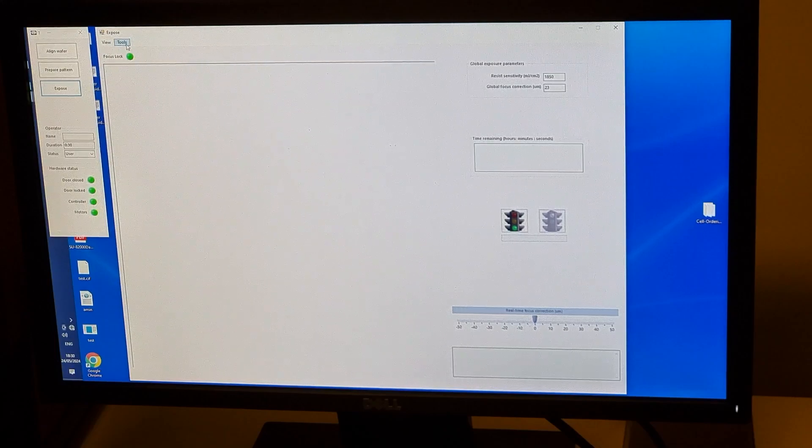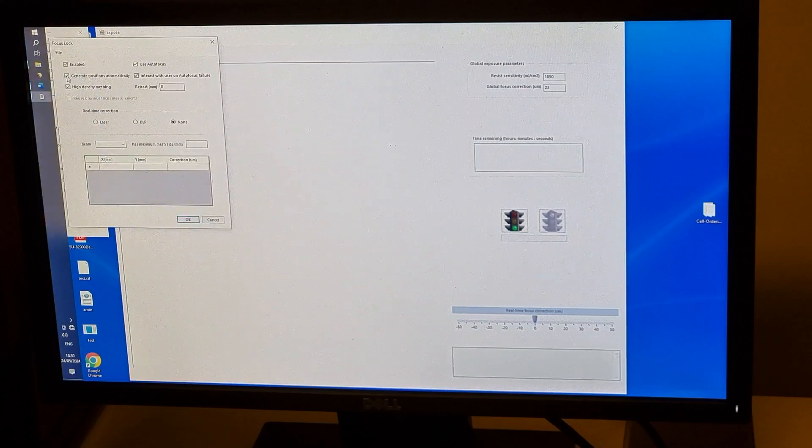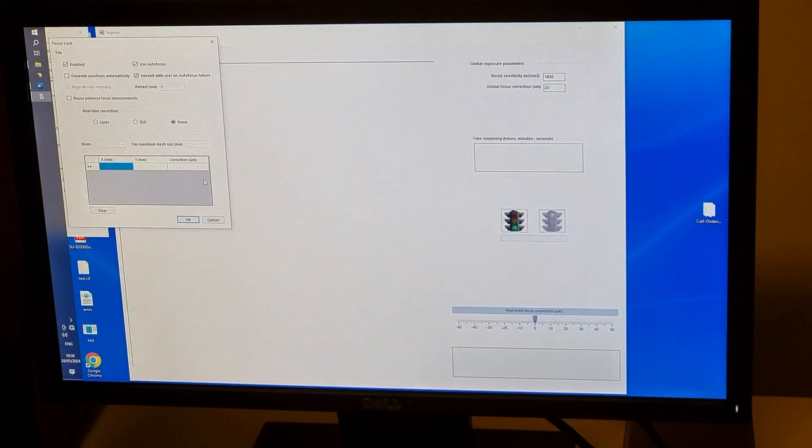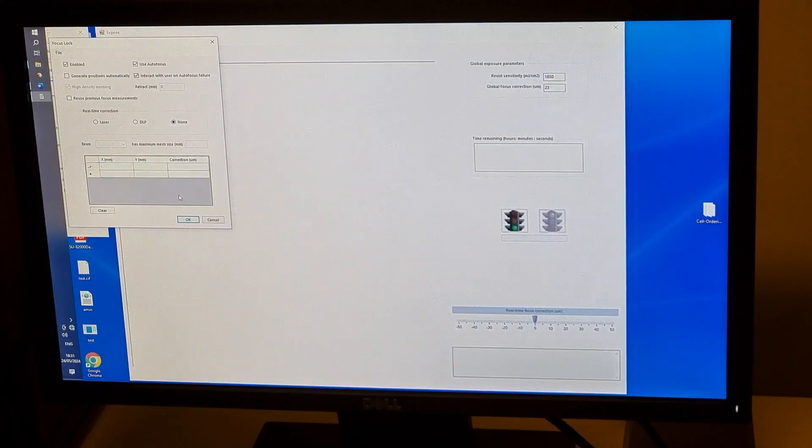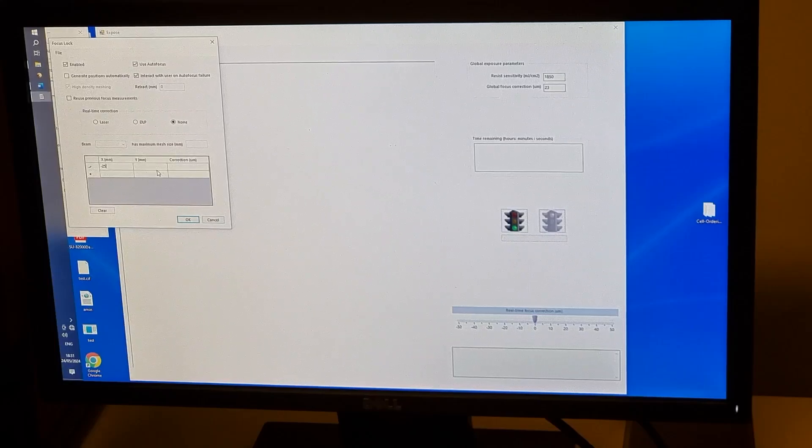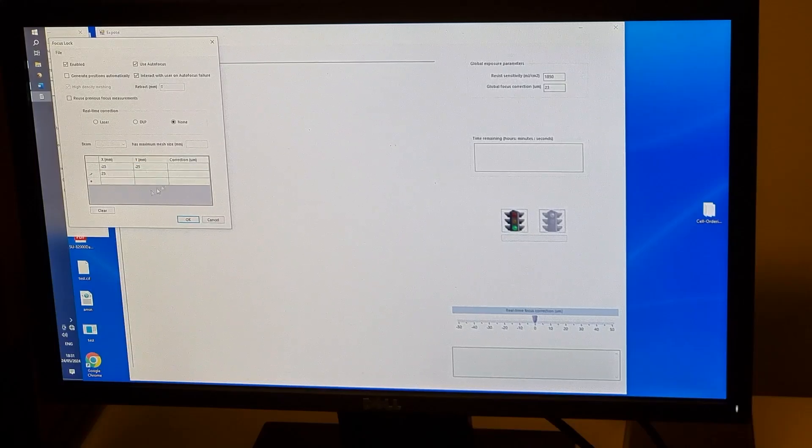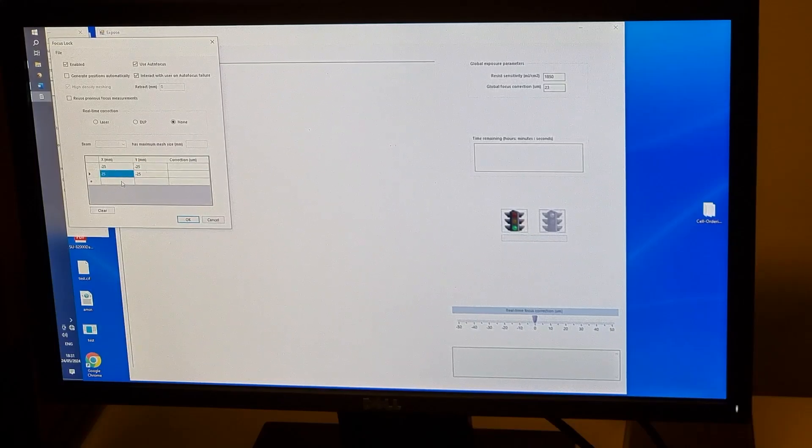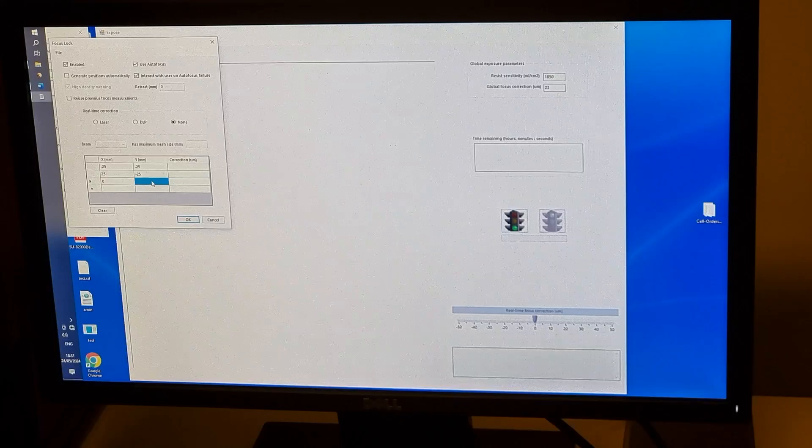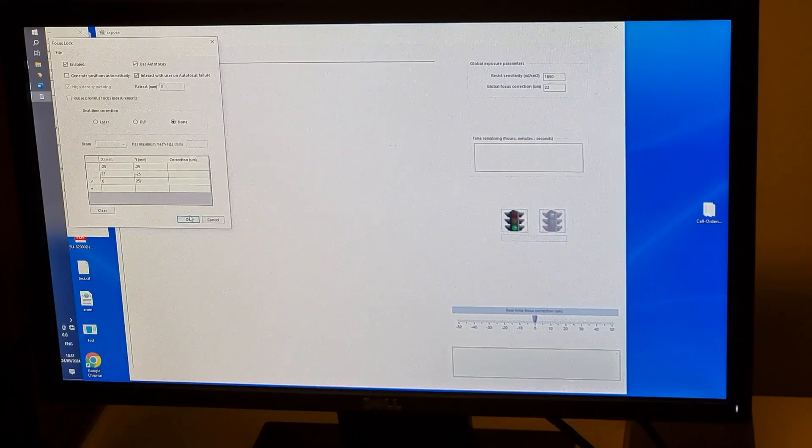The machine will find the height of the substrate at three locations, then use the tilt of this plane to stay in focus over the area to be exposed. It will choose these locations automatically based on the bounding boxes of the patterns. Since our red bounding boxes run off the wafer, we must specify locations that we know are on the wafer. If your red bounding box is entirely on the wafer, you can use the automatically generated positions. We have also found that it is more reliable to turn off the real time focus correction by choosing none.